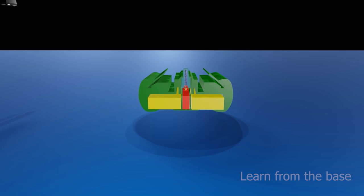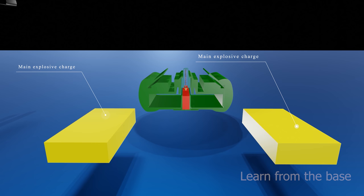These are the main explosive charge. The main charge consists of a stable explosive that is detonated by the booster charge.